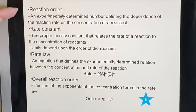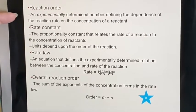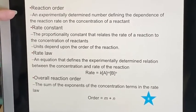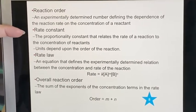So reaction order—this is always experimentally determined. You can't tell just by looking at the equation. It defines the dependence of the reaction rate on the concentration of a reactant.